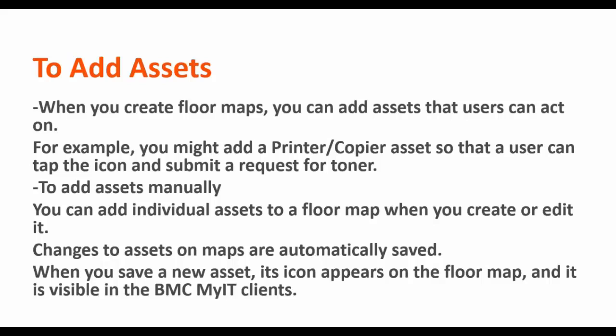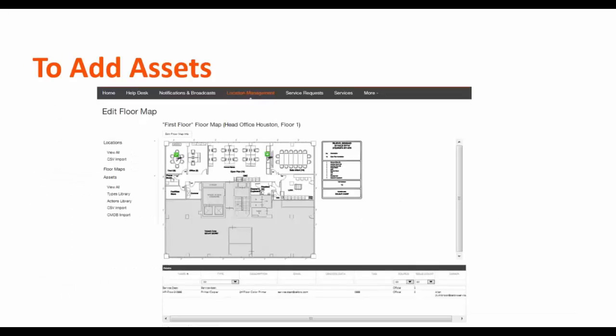You can add assets manually or import in bulk with CSV import. Changes to the asset on the map are automatically saved. When you create a new asset, the icon will automatically appear on the floor map. You can move it to its appropriate location and users in MyIT can see it. This is an example of the floor map and the assets associated to it.